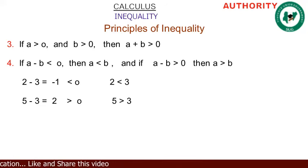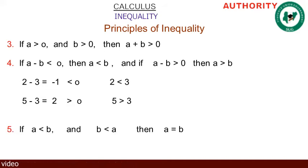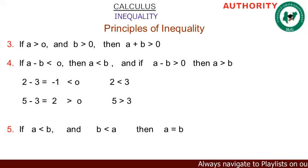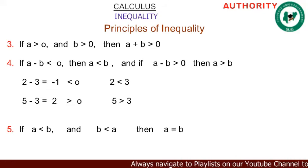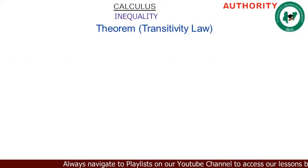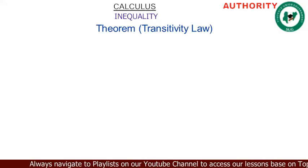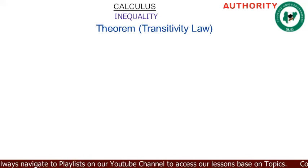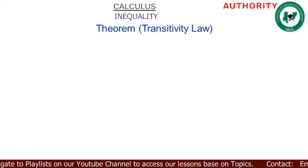Principle five: if a < b and b < a, then a = b. Now let's take the last section — the theorem known as the transitivity law.